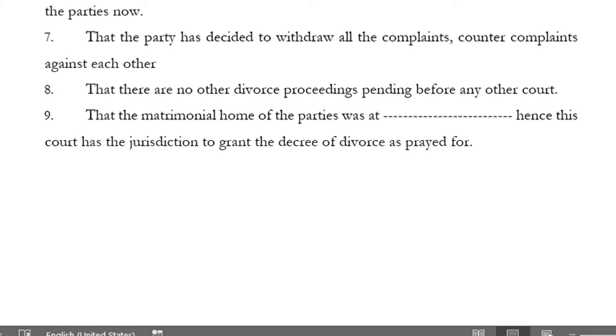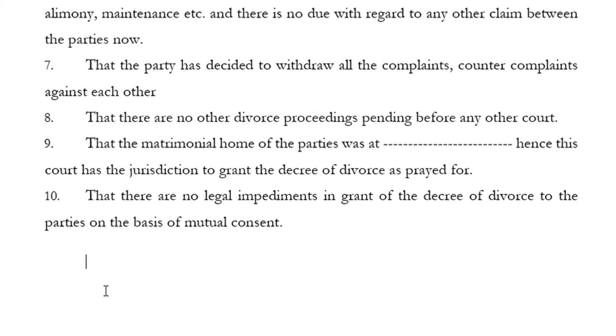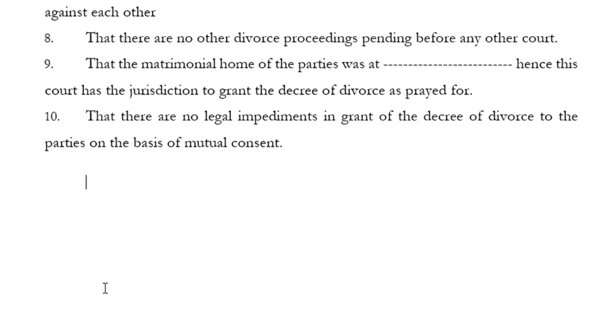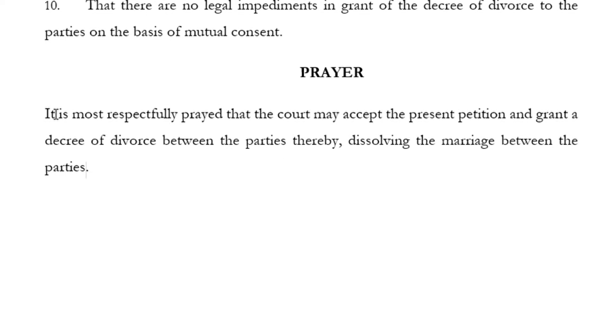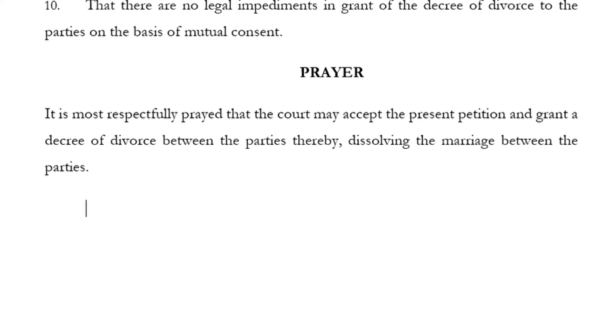That there are no other divorce proceedings pending before any other court. To establish jurisdiction: the matrimonial home of the parties was at [place], hence this court has the jurisdiction to grant the decree of divorce as prayed for. That there are no legal impediments in the grant of the decree of divorce to the parties on the basis of mutual consent.